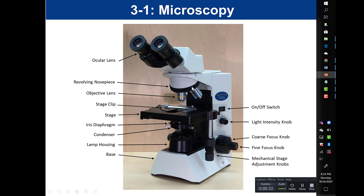Down here is the revolving nosepiece, which can rotate and switch the objective lens. These lenses down here are our objective lenses. On our microscopes we have a 4x with a red ring, a 10x with yellow, the 40x is blue, and the white 100x lens is behind. Those are the objective lenses, and they move on the revolving nosepiece.